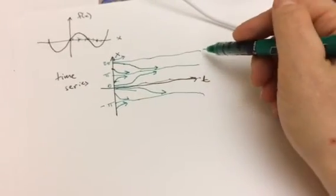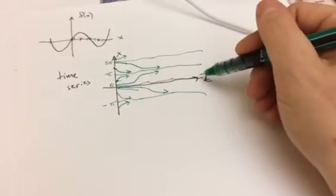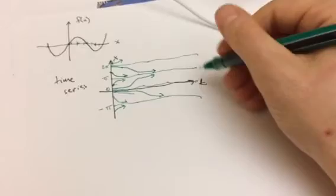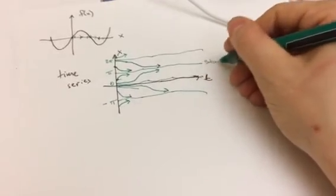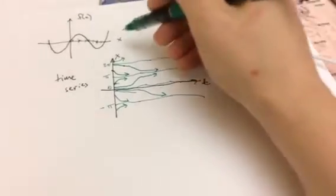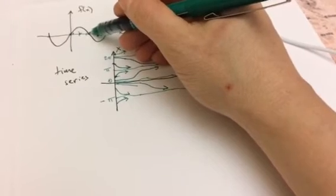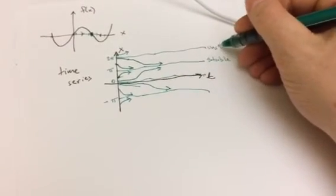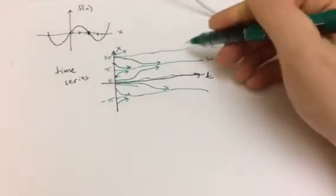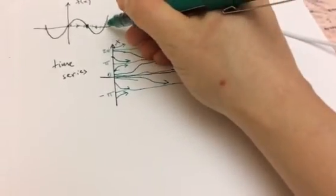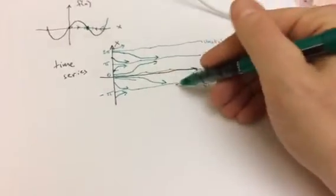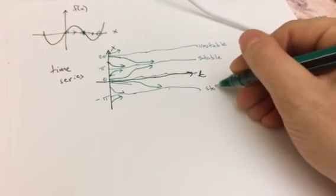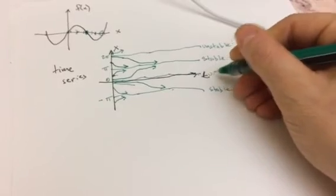And we can see the stability of the various fixed points by how these time series are approaching them. So we can see that this is a stable one. Time series are moving away from this point, so it's unstable. The time series are moving towards this point and away from this point.